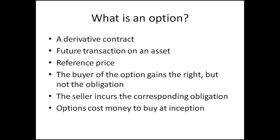Let's talk about what an option is and how it differs from a future or any other derivative. It is a derivative contract that relates to a future transaction on an asset — it derives its price from an underlying asset. So far it sounds like a future or forward, and we even have a reference price. The big difference is that the buyer of an option has the right but not the obligation to transact.